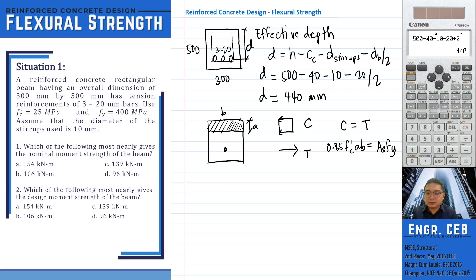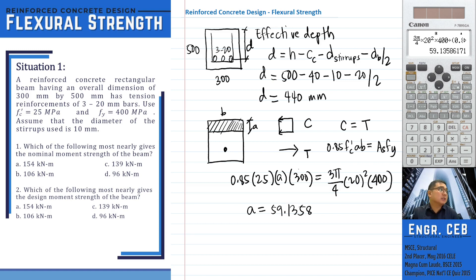We substitute 0.85 FC prime A times B equals 3 pi over 4, 20 squared, times FY, which is 400. Based on the equilibrium of the compression and tensile force, we can now solve for the depth of compression block. A is 59.13586171 millimeters.